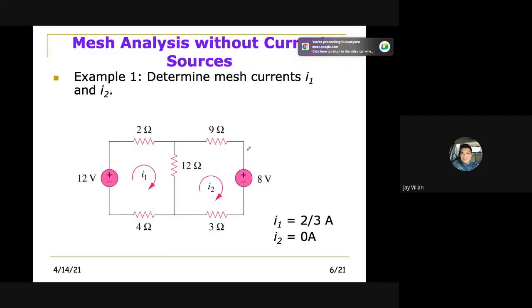So here, we need to determine mesh currents I1 and I2. Take note that, again, the definition of a mesh is a loop which does not contain any other loop. So in this case, we have one loop here and another loop here we call meshes because it does not contain any other loop.